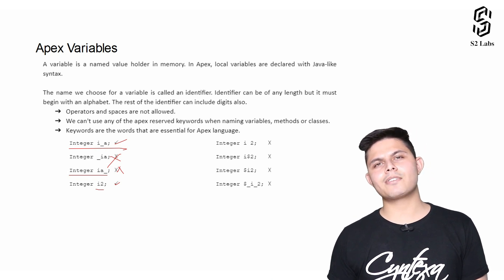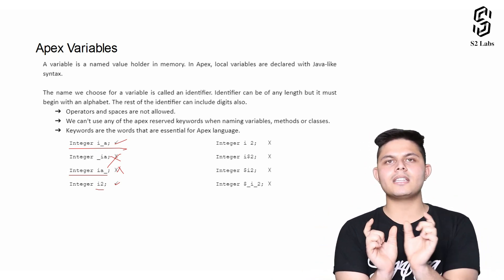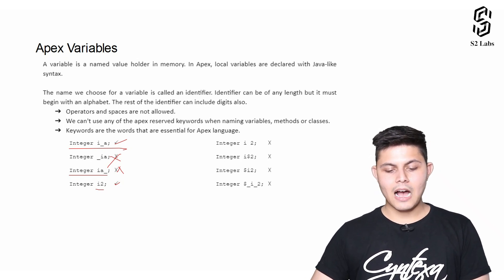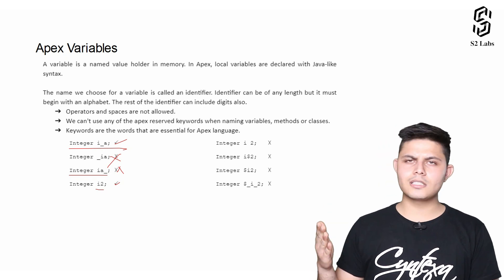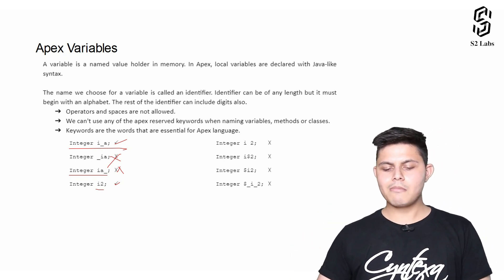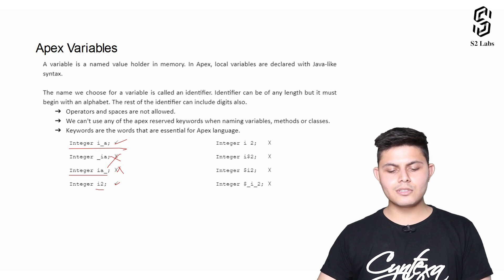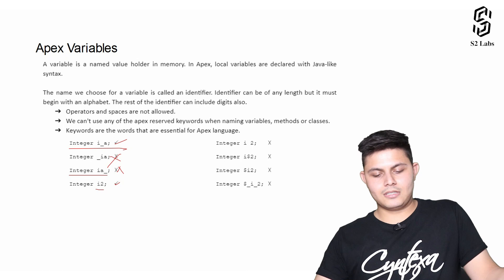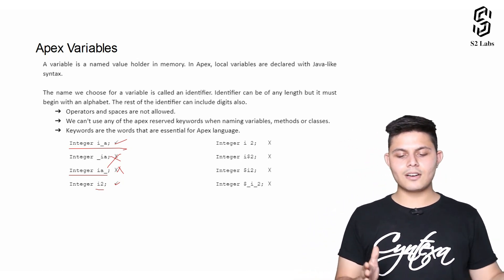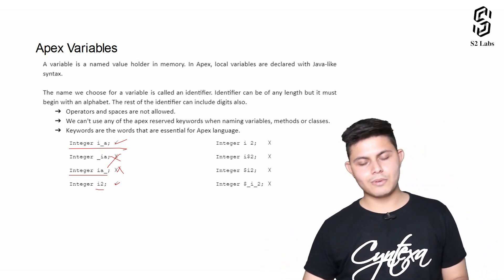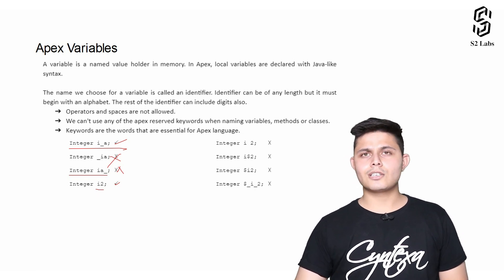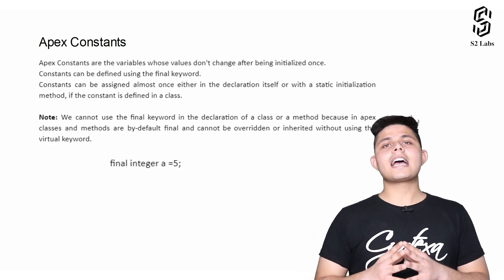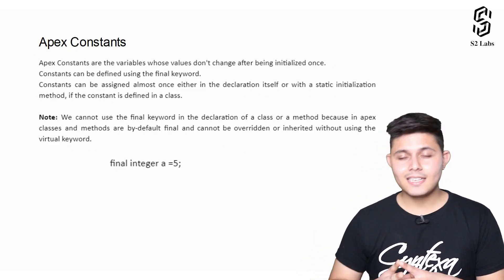A space between characters of a variable name — like 'integer i i2' — is not allowed in any programming language. The dollar sign also cannot be used inside a variable name in Apex. Whether it's 'i$2' or '$i2', the dollar sign doesn't work anywhere in a variable name. These are the key things you need to take care of while declaring a variable in Apex.